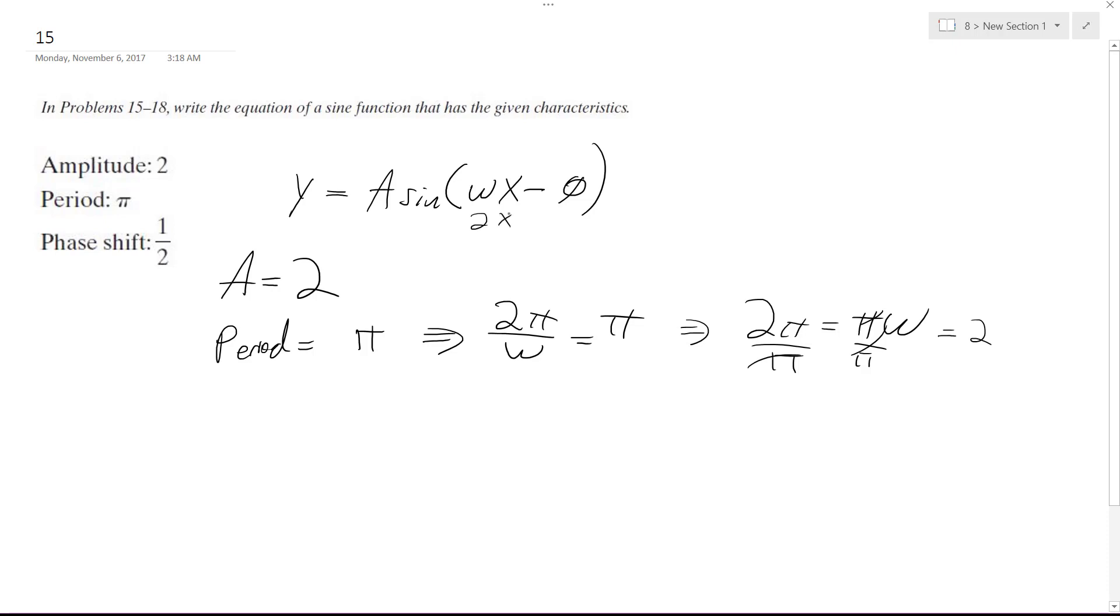So that means omega is going to equal 2, so that's going to be 2x. And then phase shift equals 1/2, and phase shift equals delta divided by omega. It's moving to the right, so I'll just leave it as is.